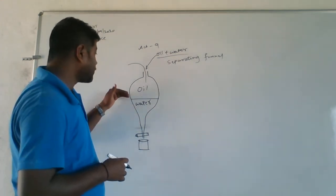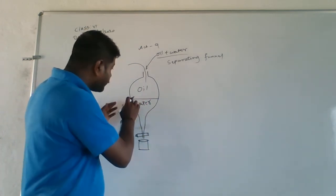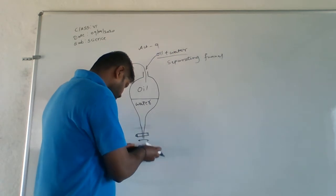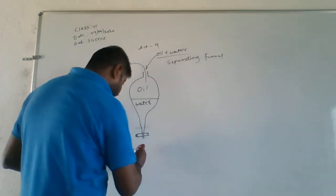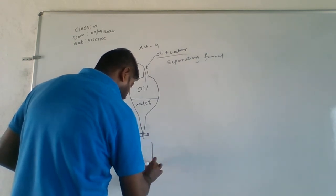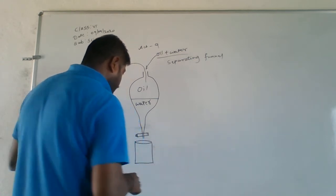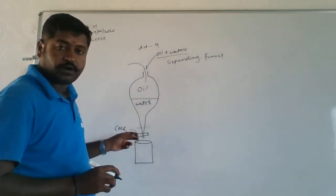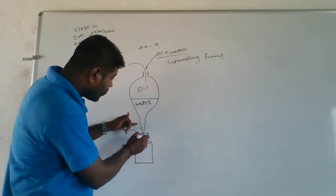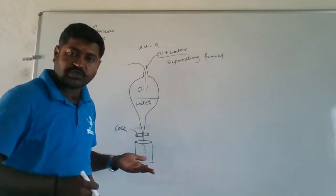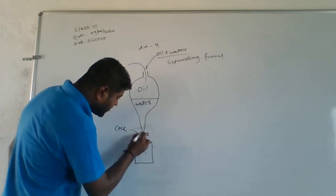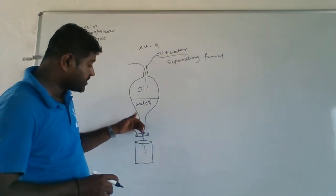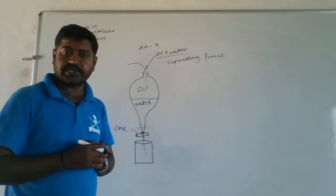As we leave it undisturbed for some time, those two get separated and they form one separate layer. The below layer is going to be of water and the above layer is going to be of oil - it depends upon the density. Water is in the lower part whereas oil is in the upper part, and where they meet, the layer is formed. At that moment we have to take one beaker and open the cock so that only water comes out into the beaker. When this water layer has come out, we have to close the cock again so that oil doesn't come and settle in the beaker.